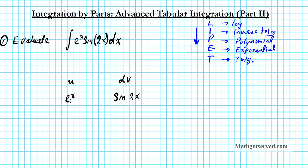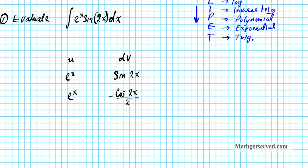Now let's differentiate and integrate. If you differentiate e to the x, you get e to the x. The antiderivative of sine 2x is negative cosine 2x over 2 — it's negative because the derivative of cosine is negative sine, so we compensate with a negative. We are not done yet because we don't have a sine on the dv column. Differentiating again gives e to the x; integrating negative cosine 2x over 2 gives sine 2x over 4, because of the chain rule the 2 multiplies: 2 times 2 gives 4.